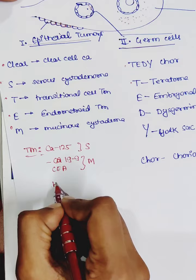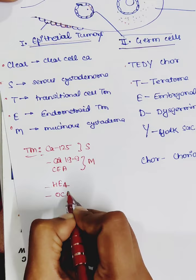And the common markers for all of the epithelial tumors are HE4, OCA. These are the new tumor markers for the epithelial tumors.